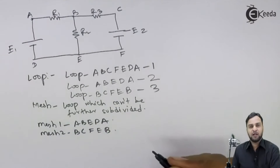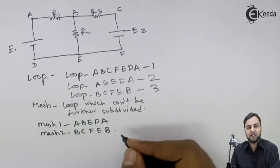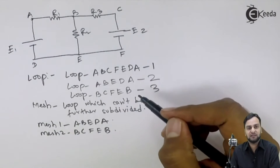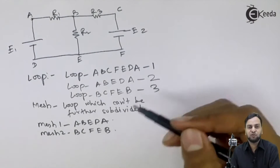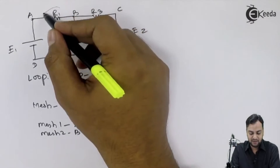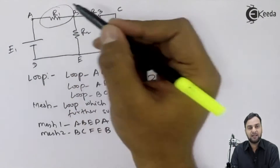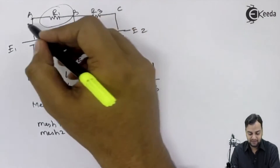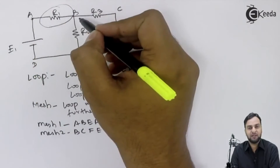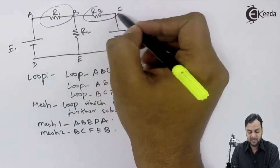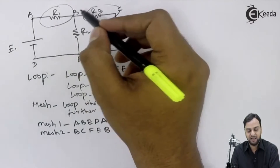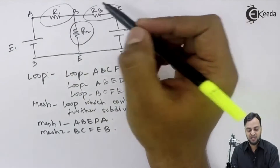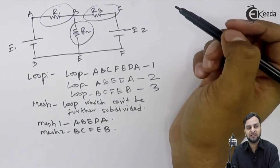So before starting mesh analysis — what is the use? Why do we use mesh analysis? We use mesh analysis to find current in any branch of the circuit. For example, A-B is one branch, B-C is another branch. We can find current directly by using mesh analysis in branches R1, R2, R3.